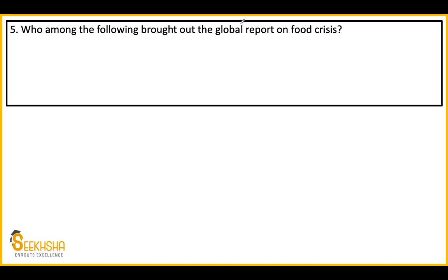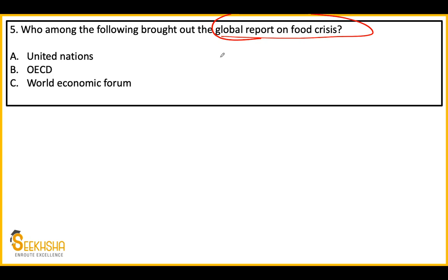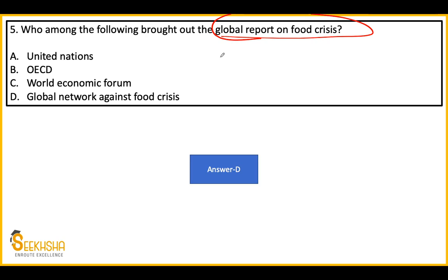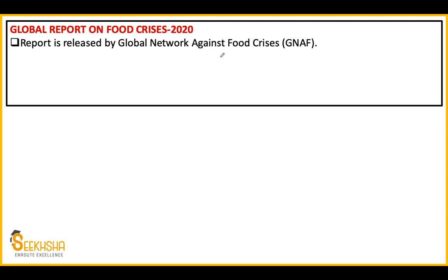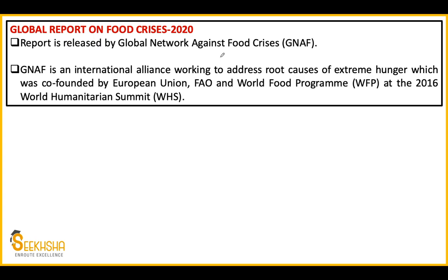Now the last question: Who among the following brings out the Global Report on Food Crisis? Option A: United Nations. Option B: OECD. Option C: World Economic Forum. Option D: Global Network Against Food Crises. The correct answer is Option D - Global Network Against Food Crises. This report was released in 2020. The Global Network Against Food Crises (GNFC) is an international alliance working to address the root causes of extreme hunger. It was co-founded by the European Union, FAO, and World Food Programme at the 2016 World Humanitarian Summit. Statement-based questions can also come on this - like what GNFC is, who co-founded it, when it was founded, or whether India was a co-founder.